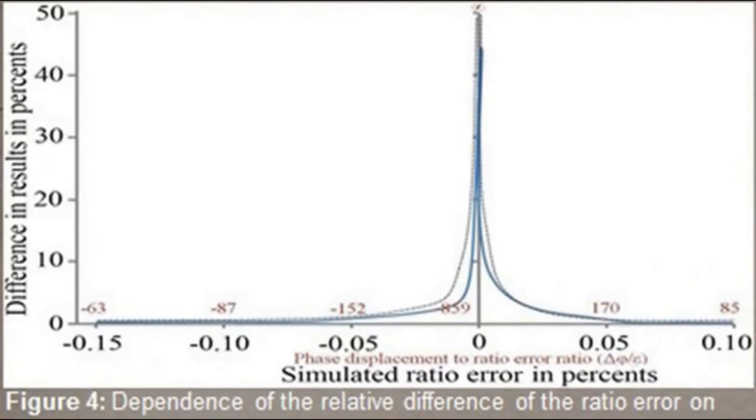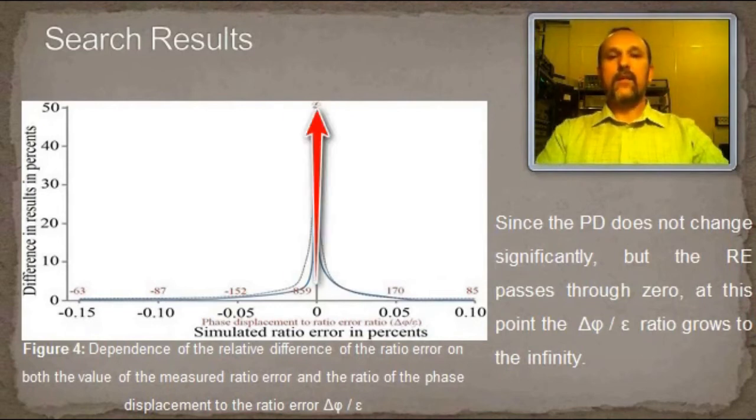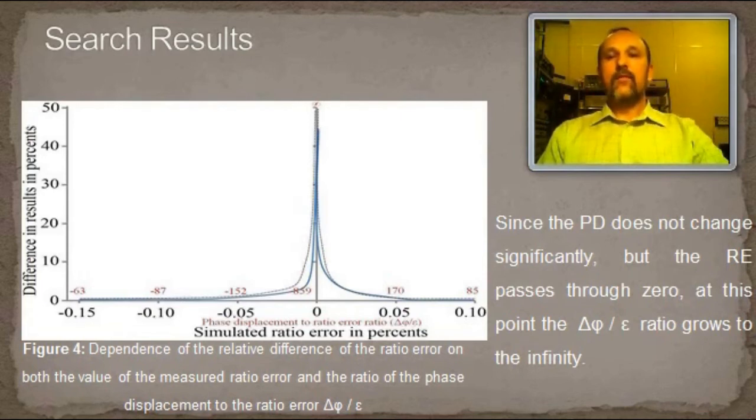Figure 4 shows that, with the simulated ratio error approaching 0, the difference in the results calculated in two ways increases significantly. In Figure 4, two dashed lines show an increase in the percentage difference in the results to infinity and the perpendicular to the abscissa axis through the coordinate epsilon equal to 0 is an asymptote.